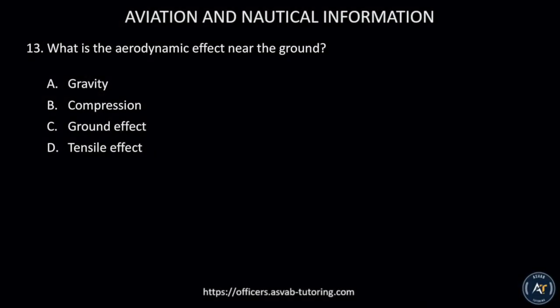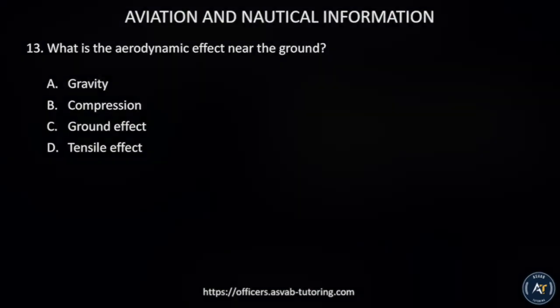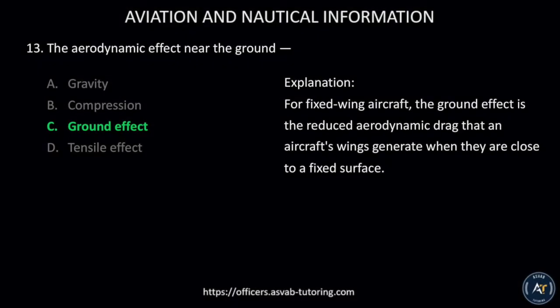Number thirteen: What is the aerodynamic effect near the ground? A) Gravity, B) Compression, C) Ground effect, or D) Tensile effect. The correct answer is C, ground effect. For fixed-wing aircraft, ground effect is the reduced aerodynamic drag that an aircraft's wings generate when they are close to a fixed surface.